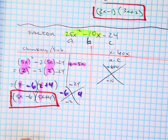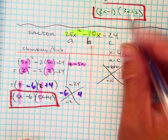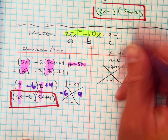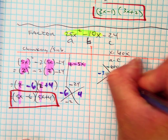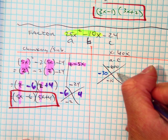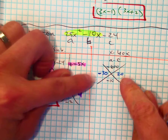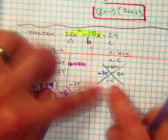Oh, where are our two numbers? Negative 30 and 20. These two multiply to be negative 600. Those add to be negative 10.